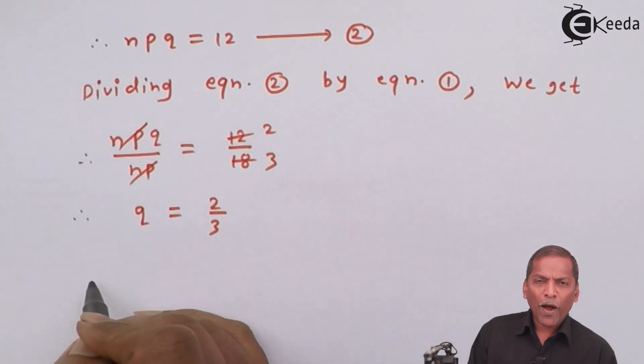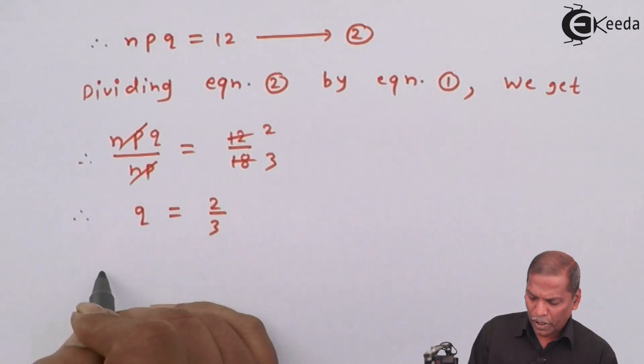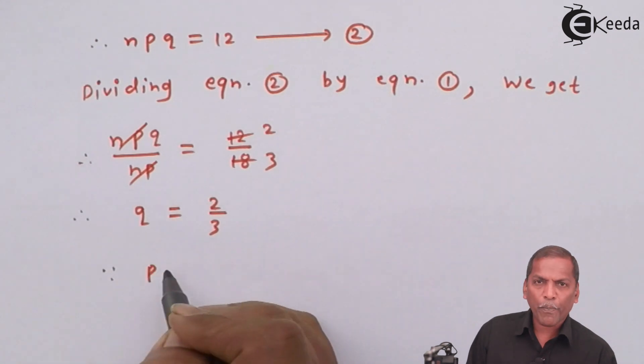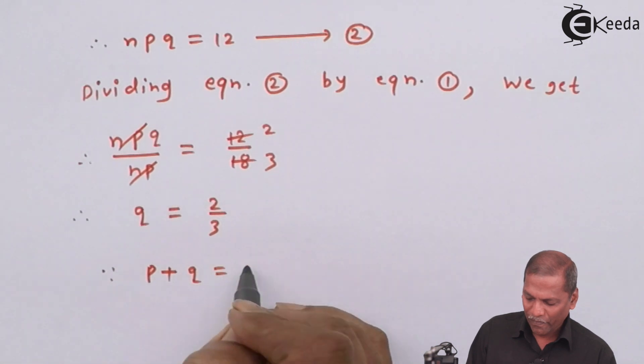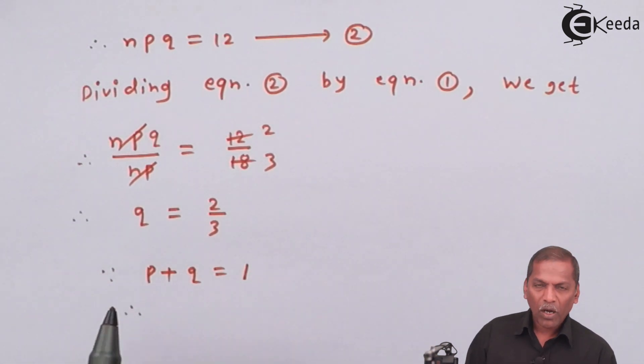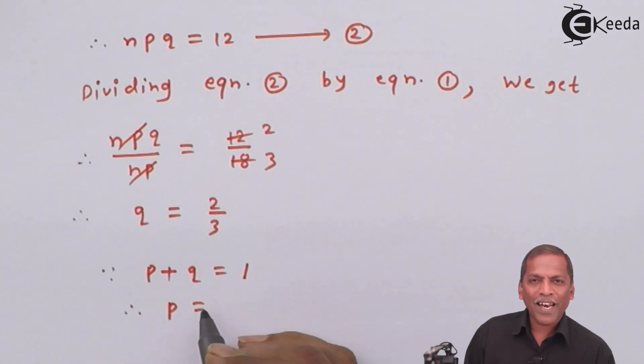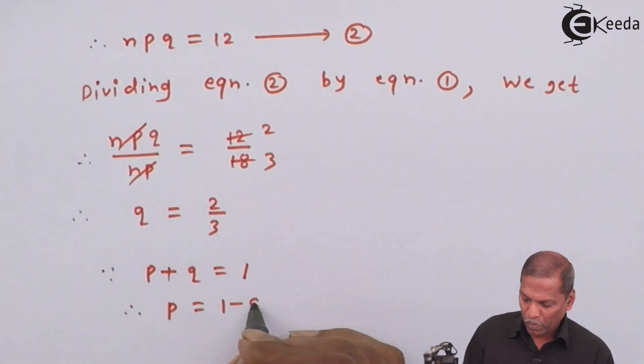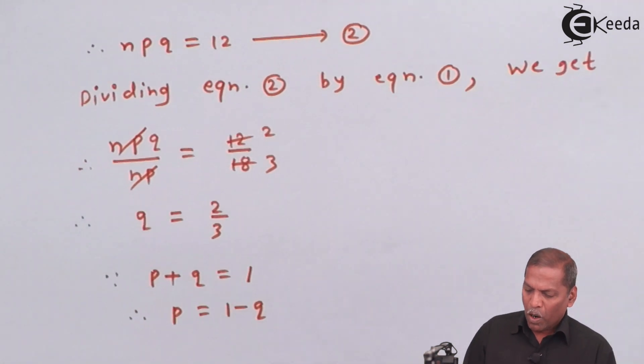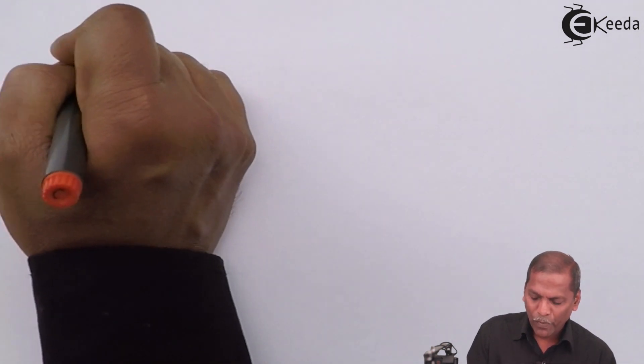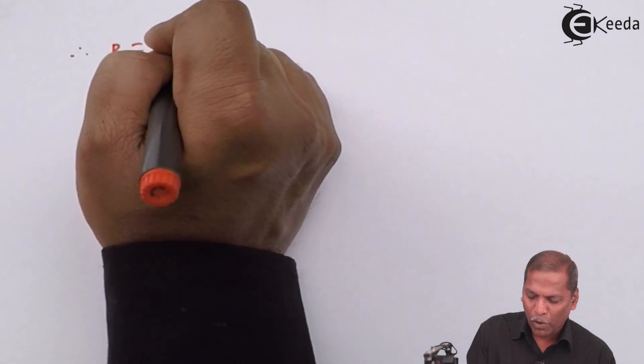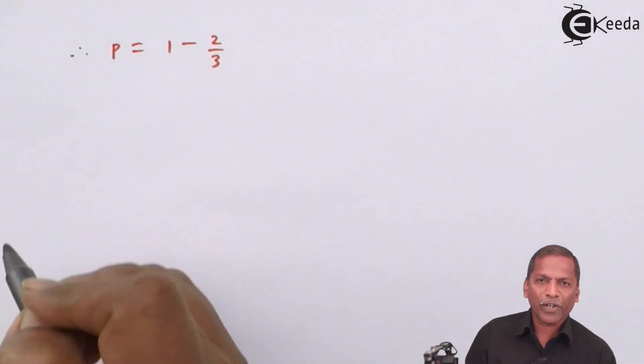Now, to find p, we use a relation that p plus q equal to 1. Therefore, p is equal to 1 minus q. Now, here for q, we substitute the value 2 upon 3. So therefore, p is equal to 1 minus 2 upon 3.